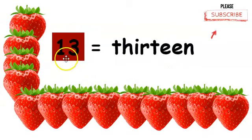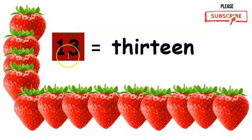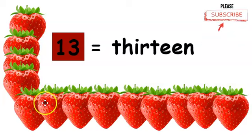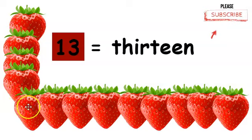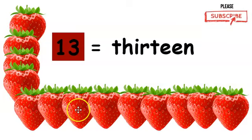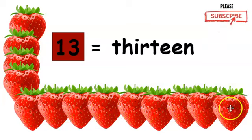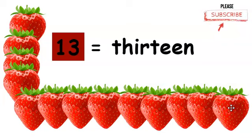This is the number thirteen. This is how you write thirteen. We should have thirteen strawberries. Let's count. One, two, three, four, five, six, seven, eight, nine, ten, eleven, twelve, thirteen. There are thirteen strawberries below.